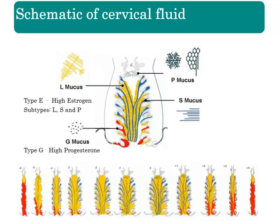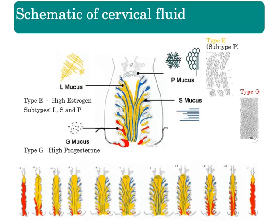In the graphic, note how the Type E mucus forms channels — these channels help sperm move into the uterine cavity. If they reach the fallopian tubes, fertilization can occur. Since Type E cervical fluid and its subtypes function to help sperm survive and reach the ovum, it is only present during the fertile window prior to ovulation. In contrast, Type G fluid lacks these channels and creates an impermeable barrier that prevents sperm from entering the cervix; it is secreted under the influence of progesterone.